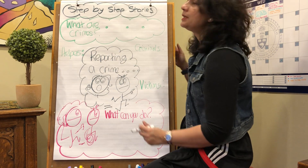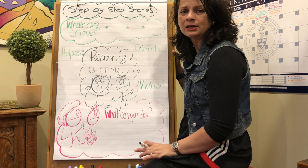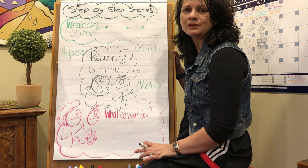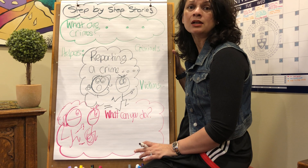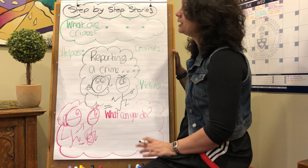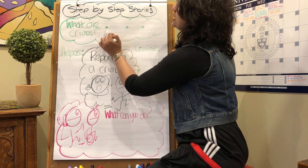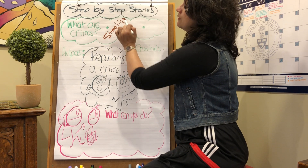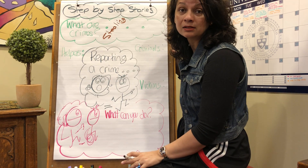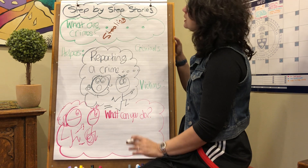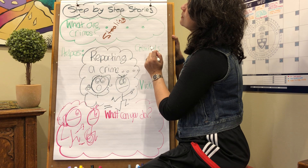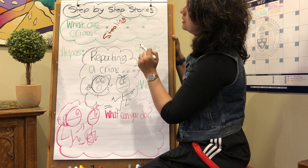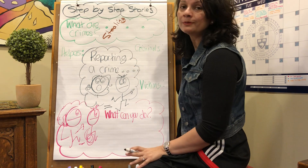A crime is whenever somebody or a group of people do something to infringe the safety or the rights of other people. A crime could be, for example, stealing — obviously you're taking something that doesn't belong to you. Another example of a crime — the technical term is